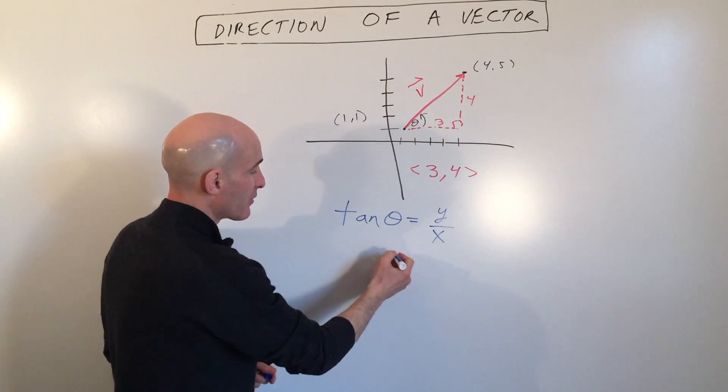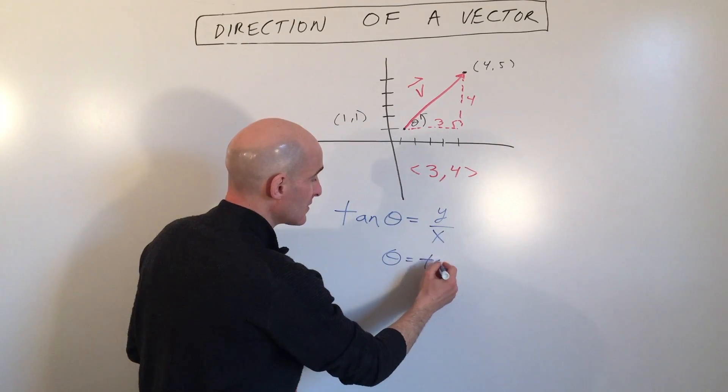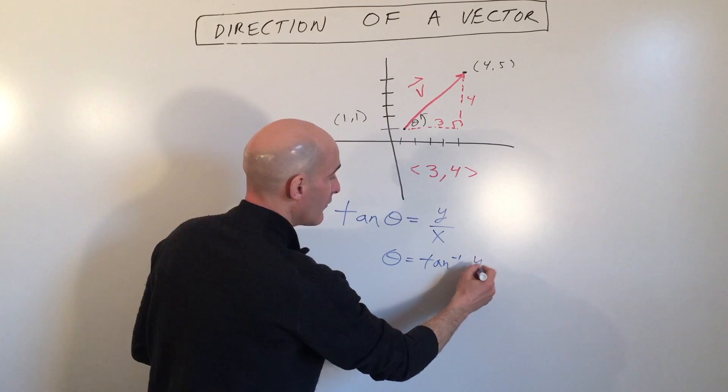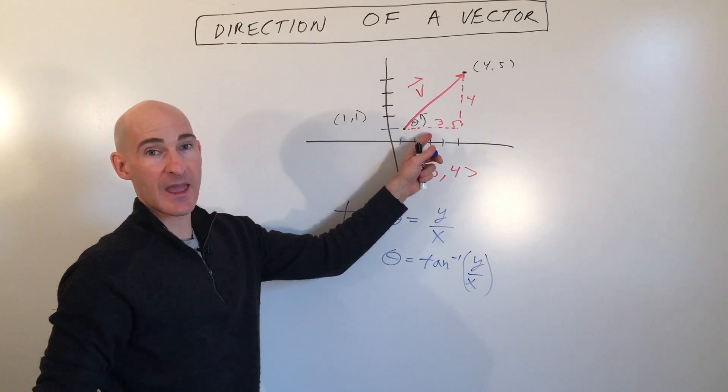And then to solve for theta, all we have to do is take the tangent inverse of both sides, so tan inverse of y over x, and that's going to give us the angle of our vector.